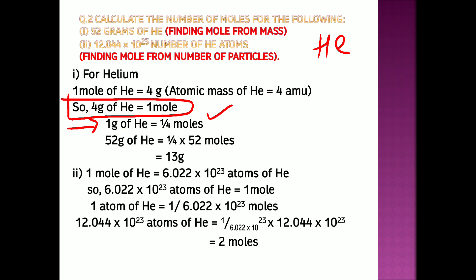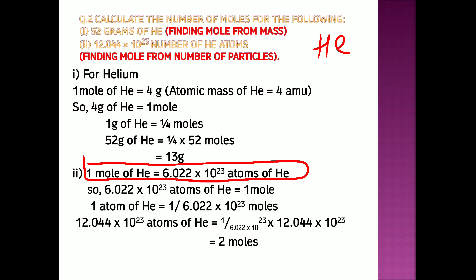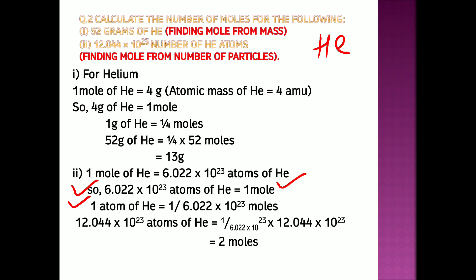The second part: calculate the number of moles in 12.044 × 10²³ helium atoms. We know 1 mole of helium = 6.022 × 10²³ atoms, so 6.022 × 10²³ atoms = 1 mole, meaning 1 atom = 1 / (6.022 × 10²³) moles. For 12.044 × 10²³ atoms: (1 / (6.022 × 10²³)) × 12.044 × 10²³. The 10²³ cancels, and 12.044 / 6.022 = 2. So the answer is 2 moles.